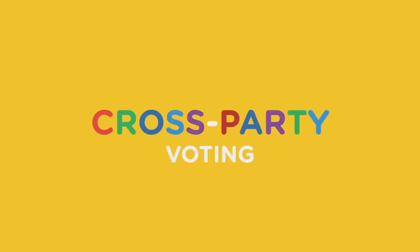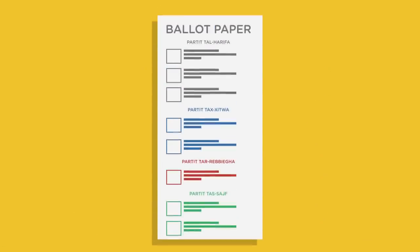Cross voting is not only valid, but actively encouraged by the system. However, your first preference vote is considered not only a vote for the candidate, but also a vote for the party you want to form a government.